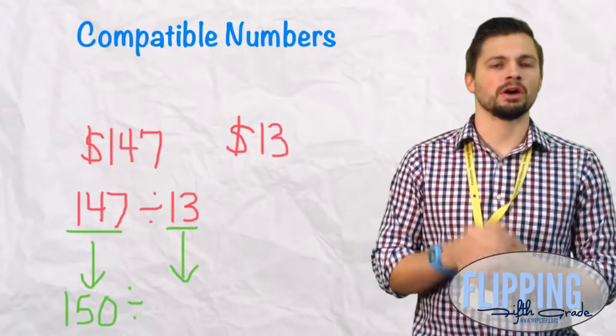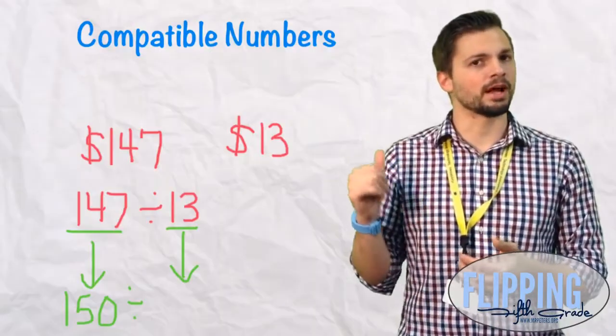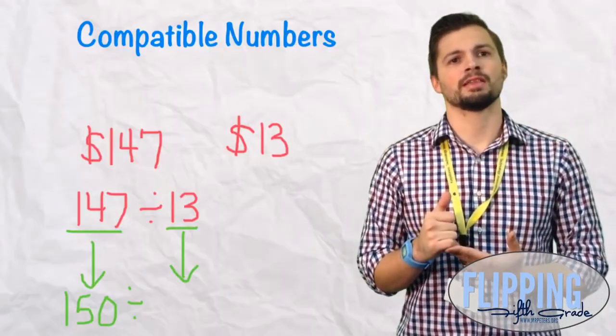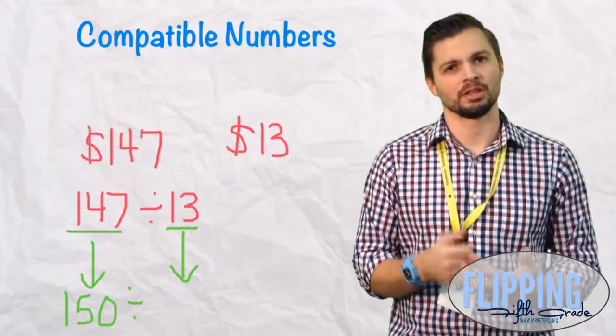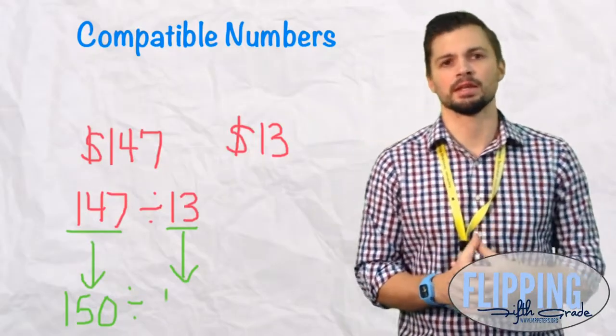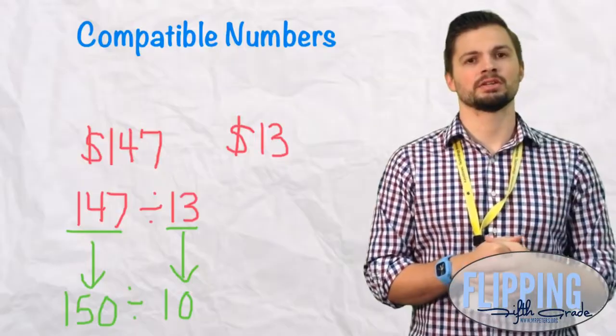So we underline the 1 and the 5, the non-zero digits, 15. And then we look for a number that is compatible with 15 that's close to 13. The first one that jumps out is 10, so we round that 13 to 10.